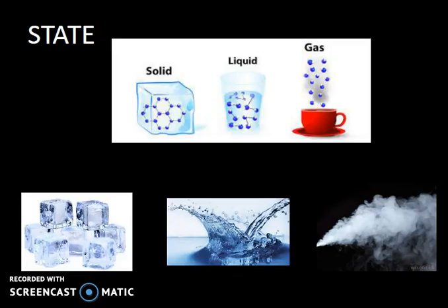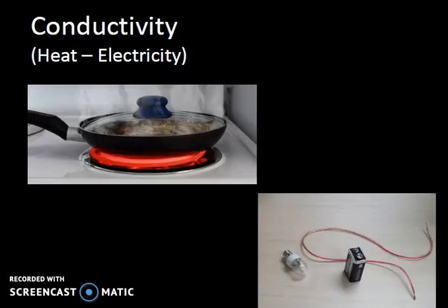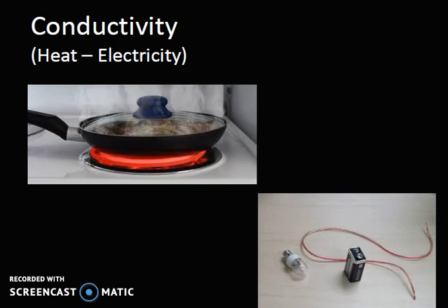Okay, next one, we'll go to conductivity. And in conductivity, it is the ability for the substance to transfer heat or transfer electricity. So, in the first example, you can see the burner heating up the pan, and then the pan heating up the food inside of it. So, the heat traveled through the pan.